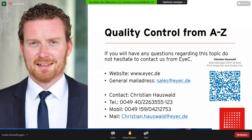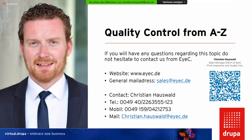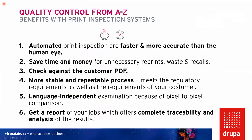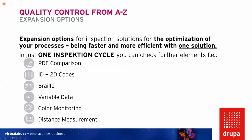I have a question here: does your system inspect color deviation? We have the possibility to check color deviation in the context of Delta E. This is possible — it is an option. As you can see on this slide, it is a color monitoring option which you can add to print inspection system solutions.